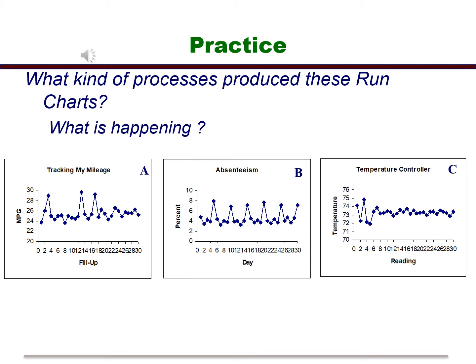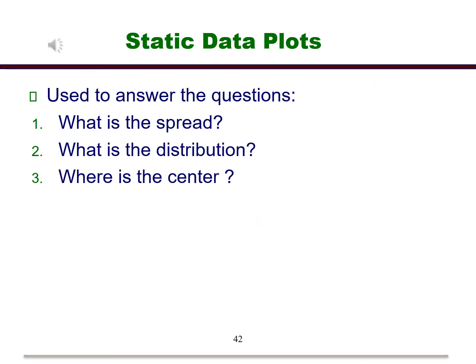Now, what should we do if the data set is static and not collected over time? Run charts are very good at allowing us to identify trends or patterns in the data, but they aren't very good at telling us a static story about the data. What if we want to know things about the data like spread, center? What does a distribution look like? We can answer these questions using static plots.